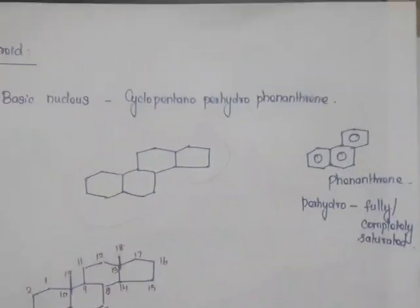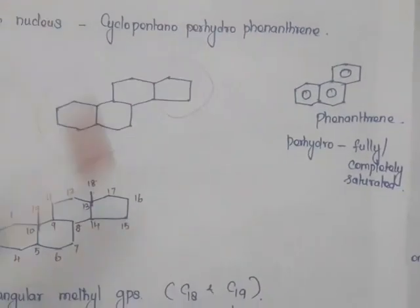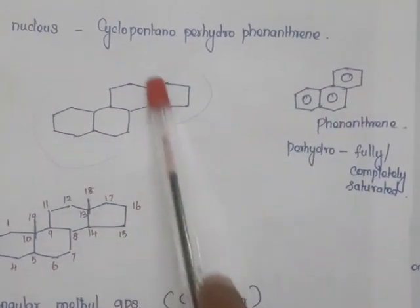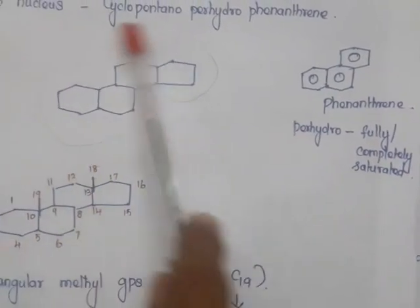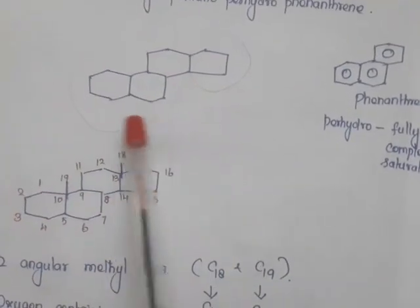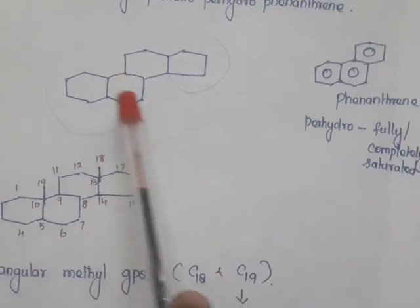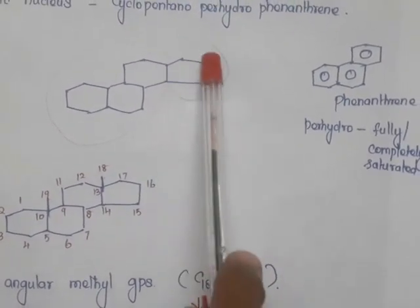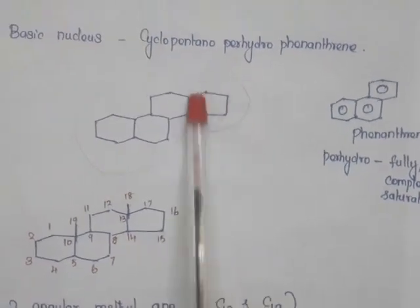Now we will see steroids. Most steroids have a basic nucleus called cyclopentanoperhydrophenanthrene. Phenanthrene is a fusion of three benzene rings. Perhydro means fully or completely saturated — so perhydrophenanthrene has no double bonds. When this is fused with cyclopentane, it is called cyclopentanoperhydrophenanthrene, which is the basic nucleus of a steroid.